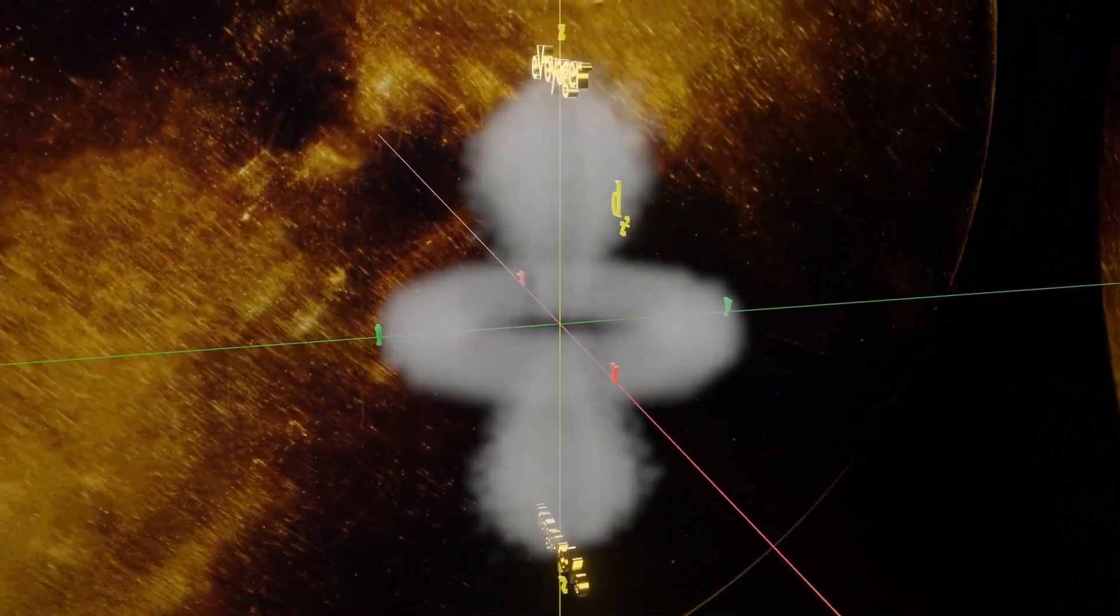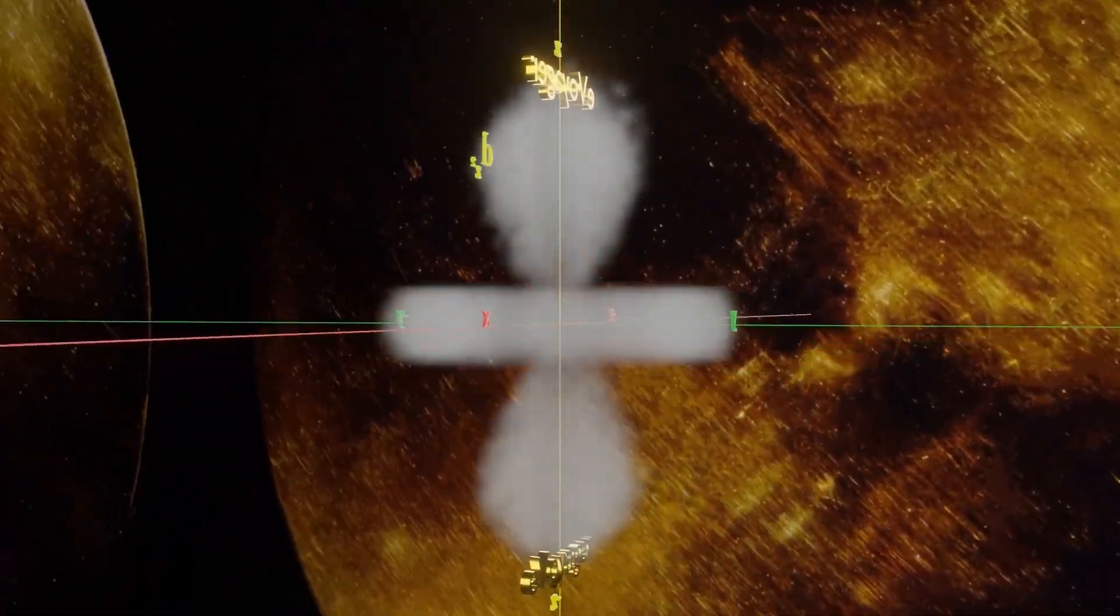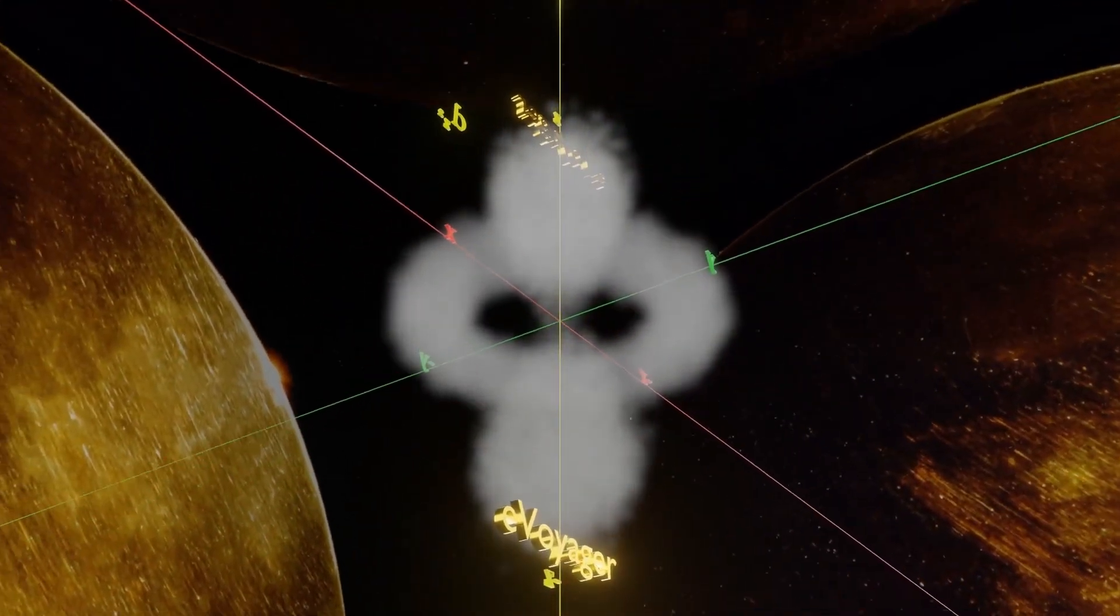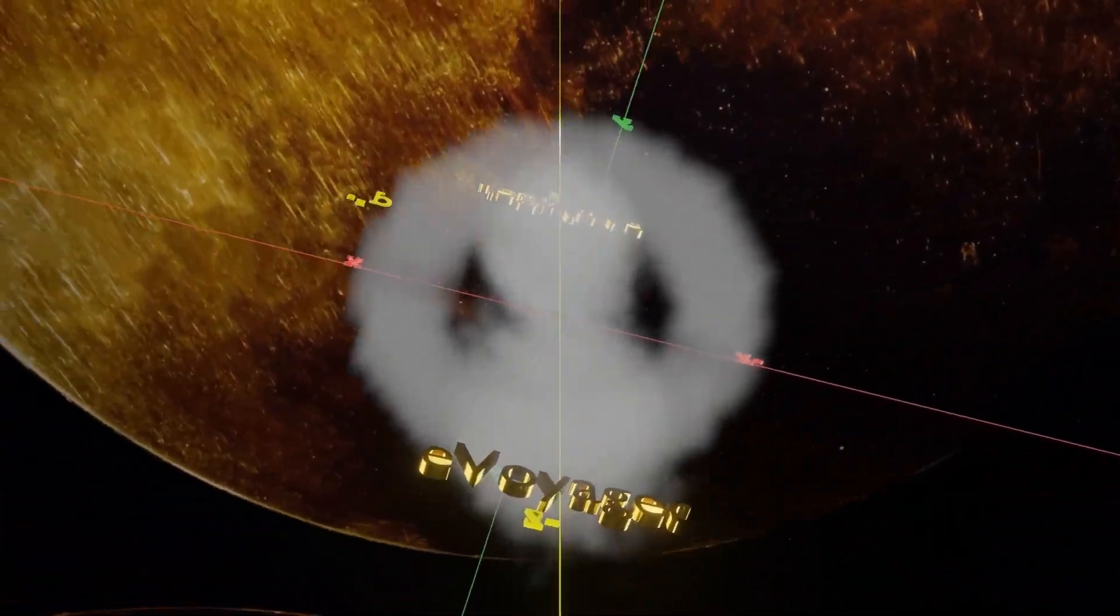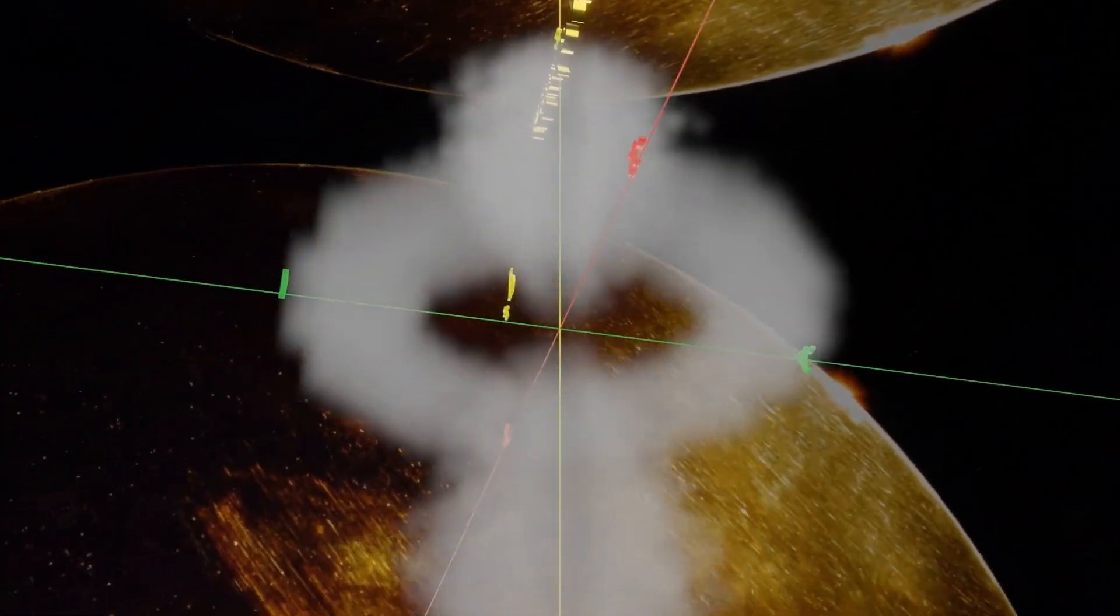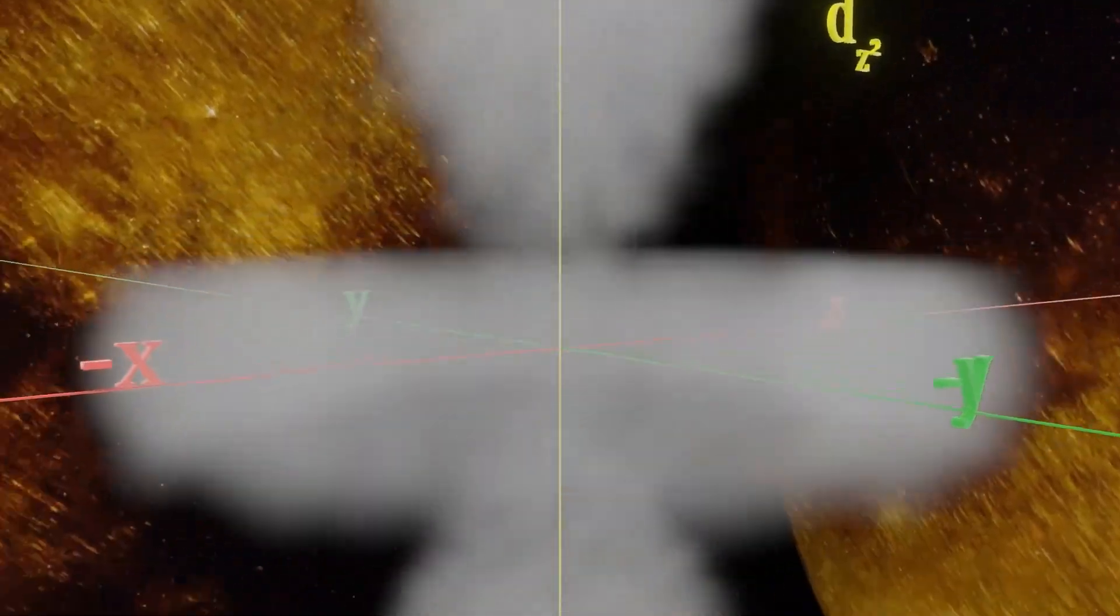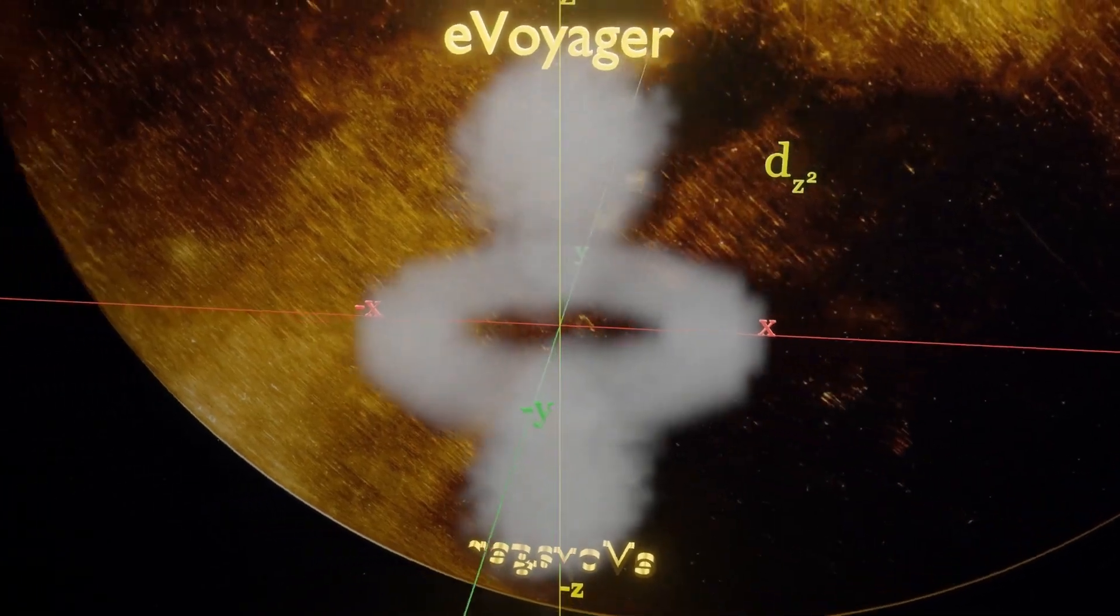Hello there everyone. In this video, we'll study the shape and orientation of dz square orbital. We'll use the x, y, z coordinates as shown, and we'll take a particular case of 3dz square.